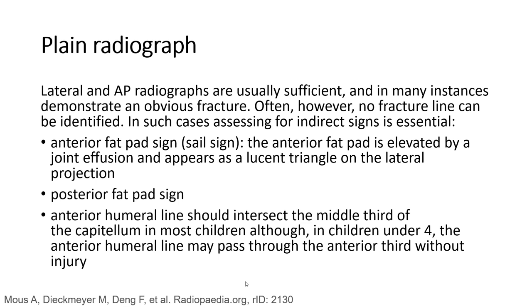Often, however, no fracture line can be identified. In such cases, assessing for indirect signs is essential. The anterior fat pad sign: the anterior fat pad is elevated by joint effusion and appears as a sail-shaped triangle on the lateral projection. The anterior fat pad should intersect the middle surface of the capitellum in most children, although in children under 4 years, the anterior humeral line may pass through the anterior surface without injury.